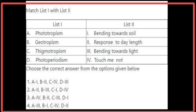Matching List 1 with List 2: Phototropism is bending towards light. Geotropism is bending towards soil. Thigmotropism is touch-me-not response. Photoperiodism is response to day length. The correct option is the fourth option.